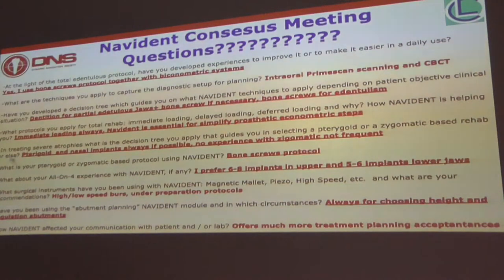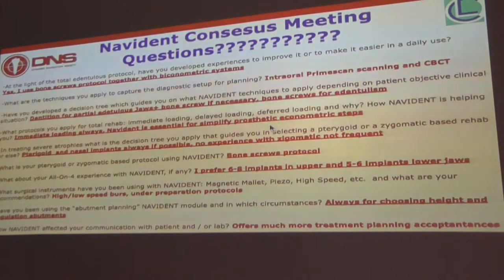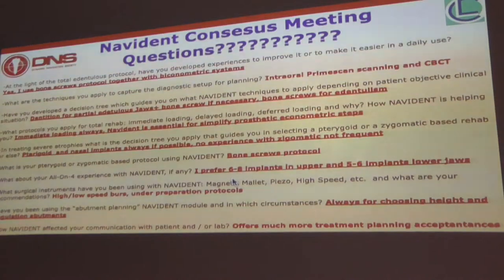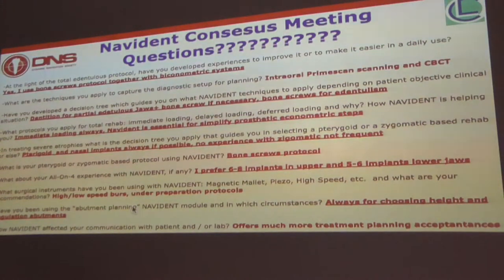Bone screws are definitely used for full edentulism. I'm using the immediate loading protocol with bone screws as I was explaining. I'm using pterygoid implants and nasal implants if possible and necessary. I have no experience with zygomatic implants. I prefer using five to six implants in the lower jaw and seven to eight implants in the upper jaw.